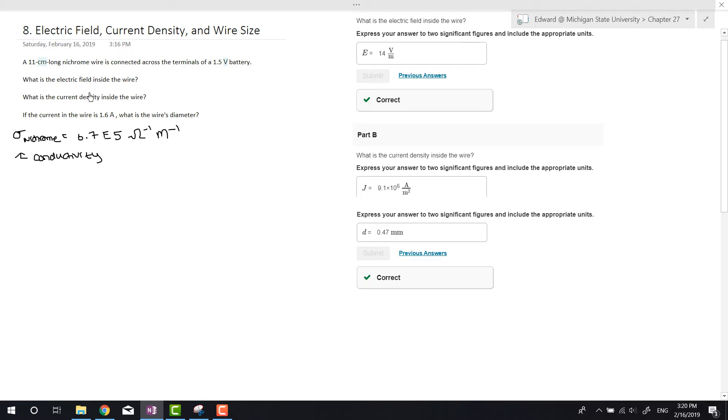So the electric field E, the units are volts per meter. What do they give us? The voltage and the length, so we already have it. Now this is just for later on - this is the conductivity of nichrome, which you can find in your textbook in chapter 27 in one of the tables. Let's keep this number in mind.